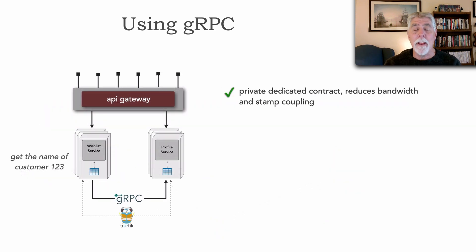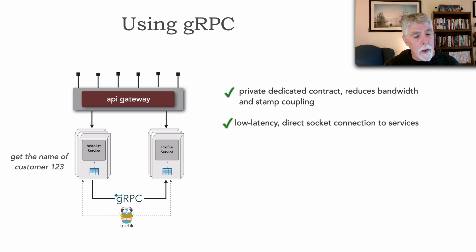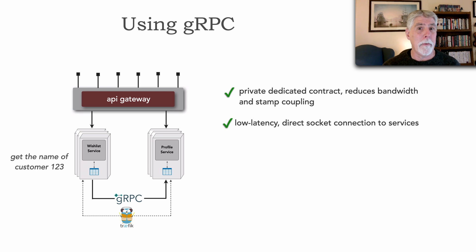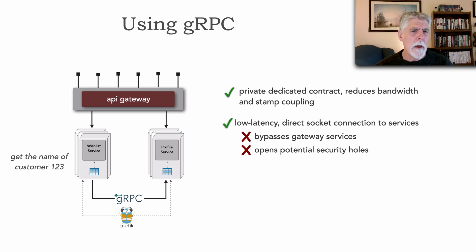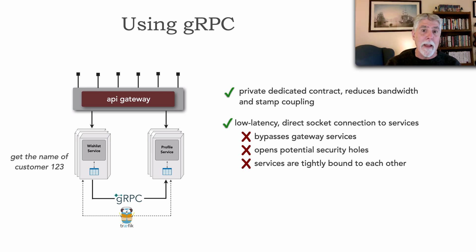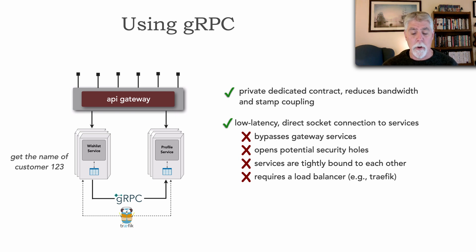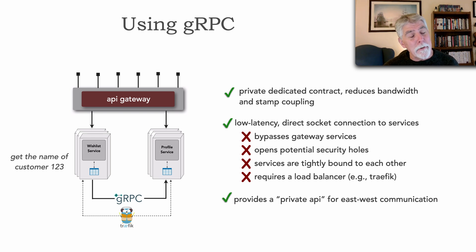Like messaging, gRPC gives us a private dedicated contract, so we don't have the stamp coupling and bandwidth issues we face with REST. It is also the fastest possible protocol between services — a direct socket connection. However, like messaging, it bypasses the API gateway and could potentially open security holes or bypass auditing and metrics gathering. Uniquely, gRPC does tightly bind services together. It also requires some sort of load balancer, and like messaging, the private API is hard to document.